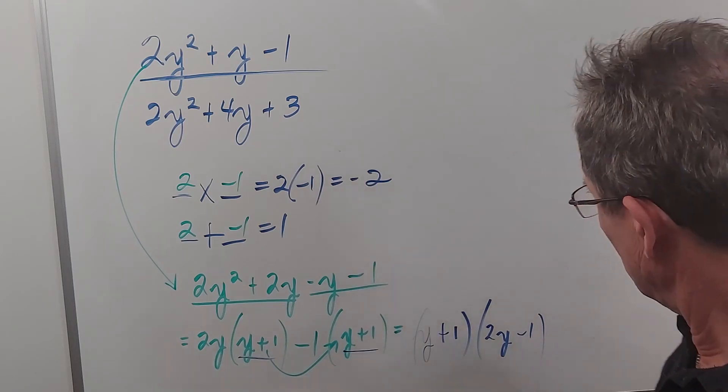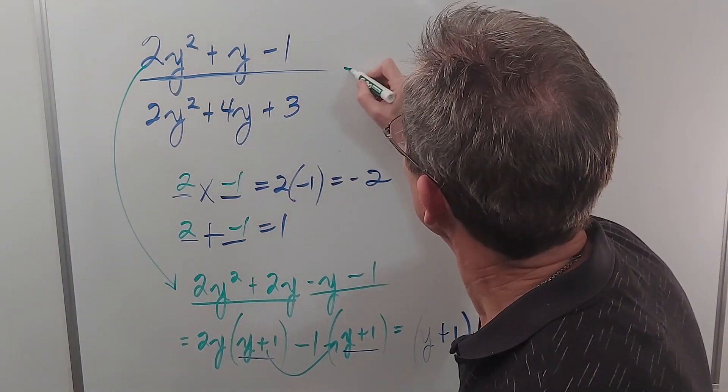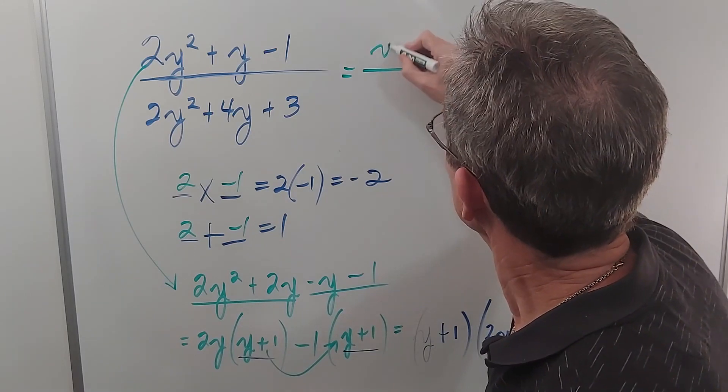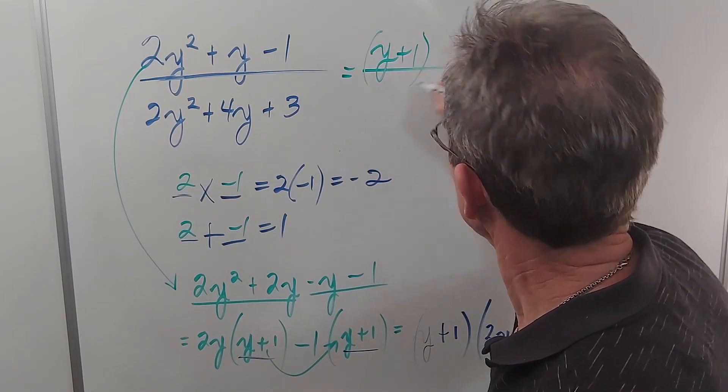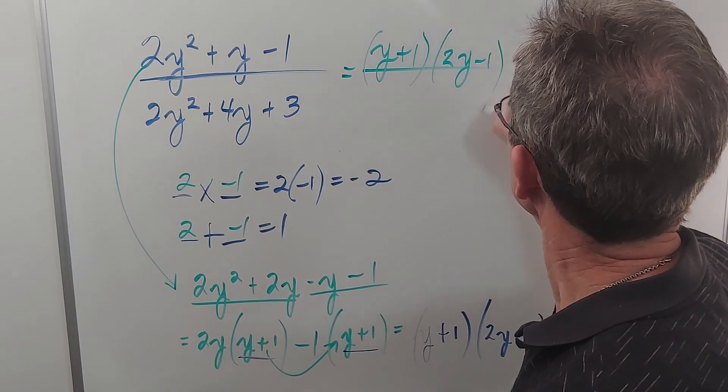And that's what I get for the numerator: (y + 1) times (2y - 1).